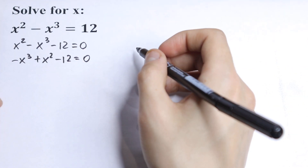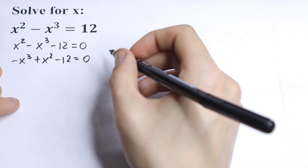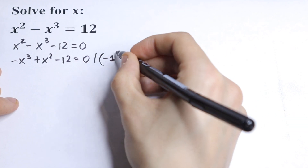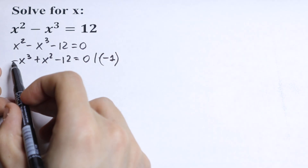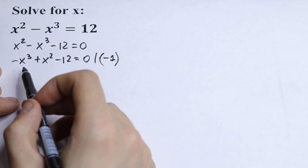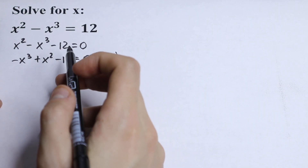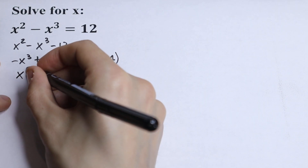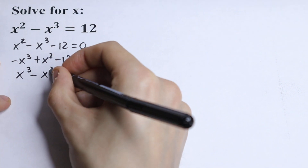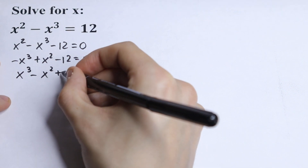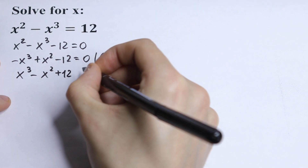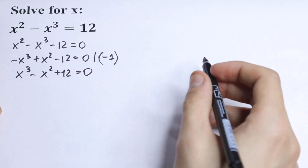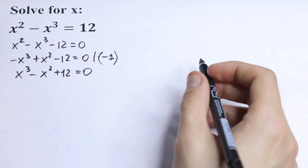The last step — let's multiply both sides by minus 1. Because we have minus right here, we don't need it, and then we will have a classic cubic equation. So we will have x cubed minus x squared plus 12 equal to 0. And this is our cubic equation.